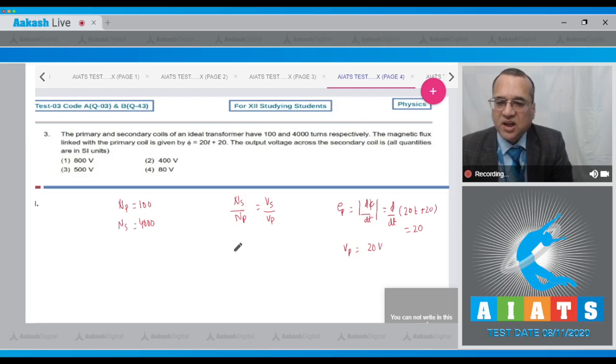It is ideal, so your voltage of the primary is equal to 20 volt. If it is 20 volt, I will fill up here. This is 4000, this was equal to 100. Voltage across the secondary is required, voltage across the primary is 20. So Vs equals 20 multiplied by 40, this would be 800 volt. The first option is 800 volt, therefore the answer to this question is option number 1.